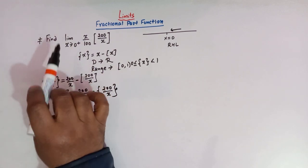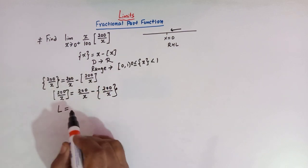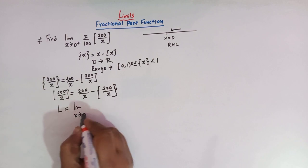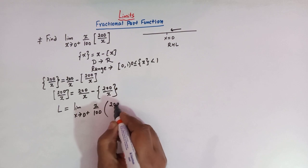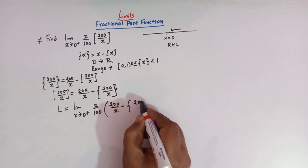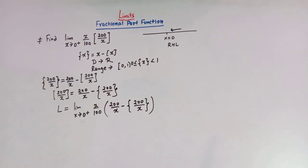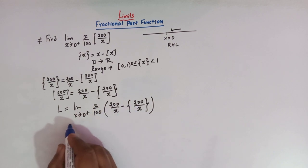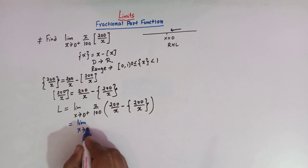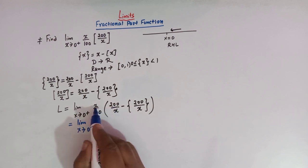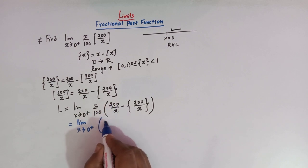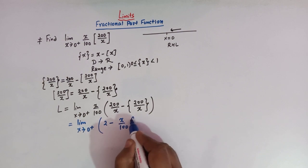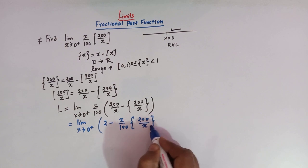Let us call this limit L. So L can be written as: limit x tends to 0 positive of x over 100 times the quantity 200 over x minus the fractional part of 200 over x. We then multiply both terms by x over 100. When we multiply 200 over x by x over 100, the x's cancel and 200 over 100 gives 2. So we now have the limit of 2 minus x over 100 times the fractional part of 200 over x.